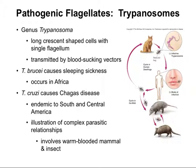Here is how the cycle works. The trophozoite multiplies in the intestinal tract of the bug, and as such, it ends up in the feces of that bug. The bug then bites the host — the mammal — on the mucous membranes, such as the eye, lip, or corner of the mouth. In addition to biting, it also defecates right on the bite site, which contaminates that site with trypanosomes.